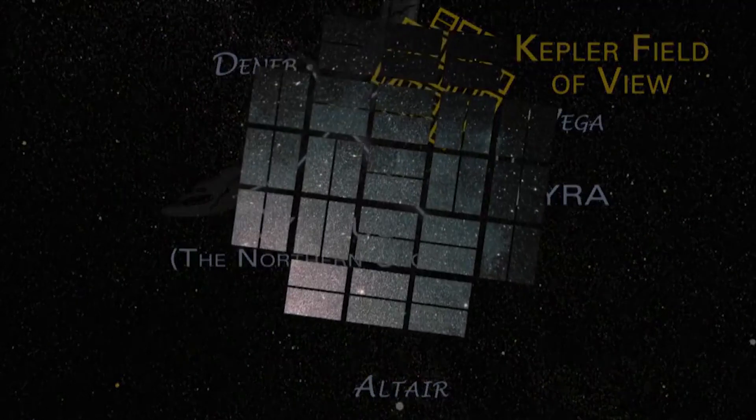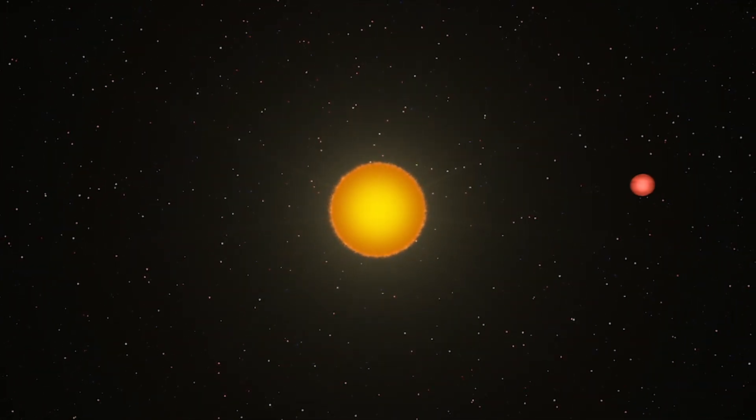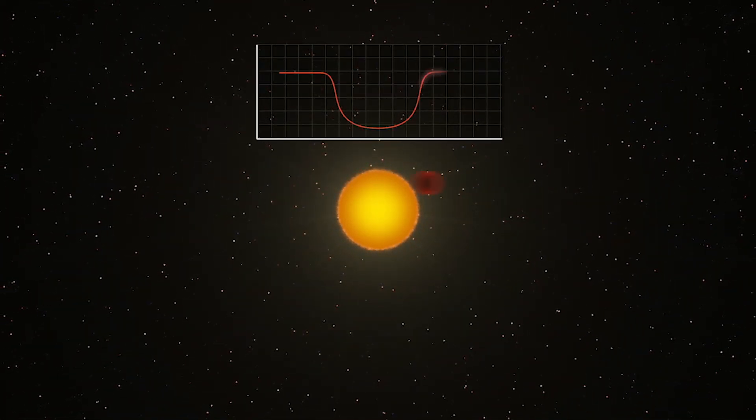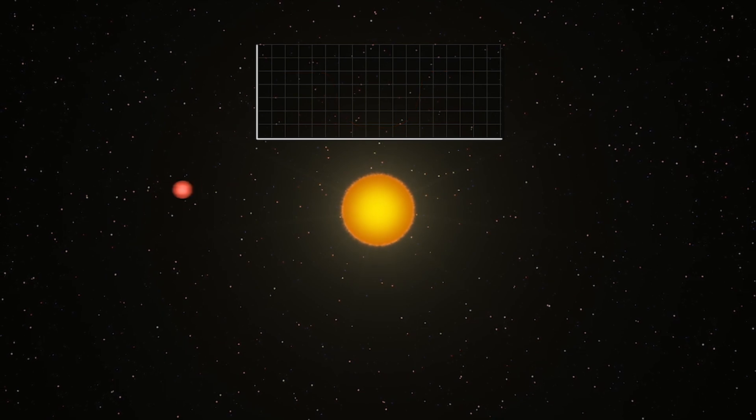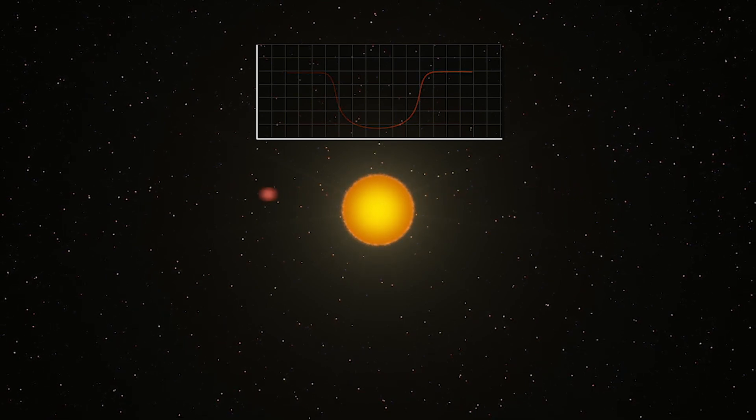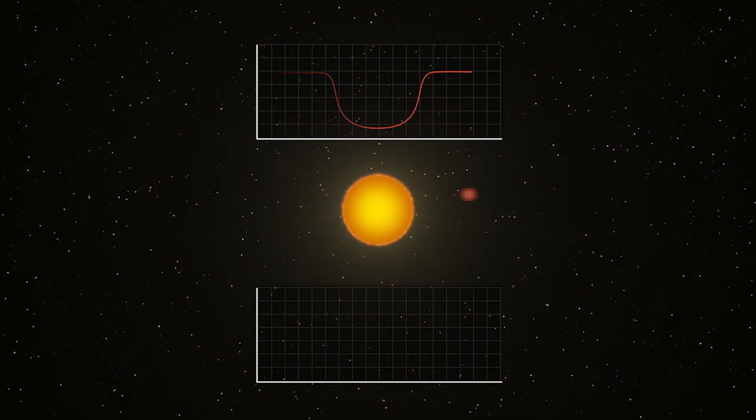The data it collects is sent to Earth and analysed to see if any stars dim periodically. You see, the concept is, if a star's planet passes in front of Kepler's view, the star will dim. If it dims, for instance once every 100 days, we can confirm that it is a planet and it takes 100 days to orbit.